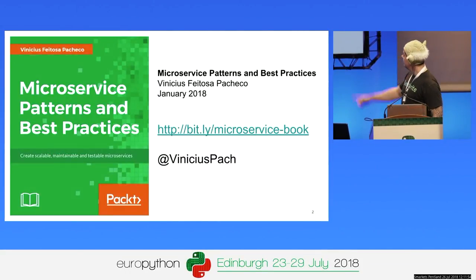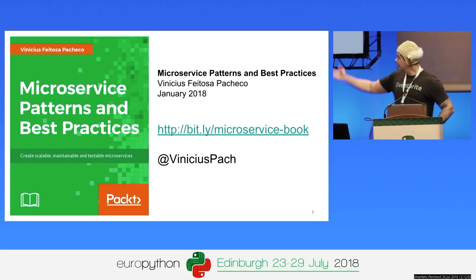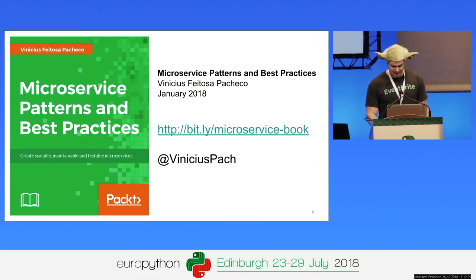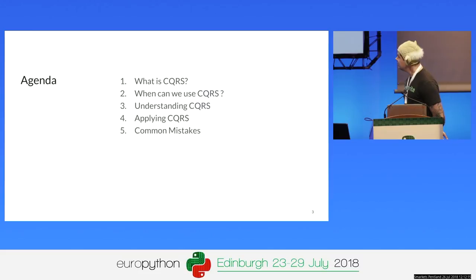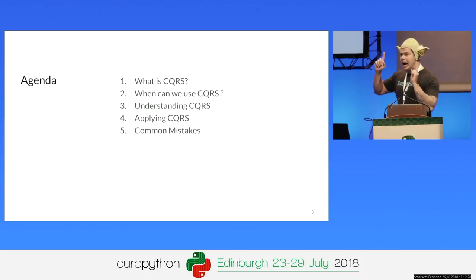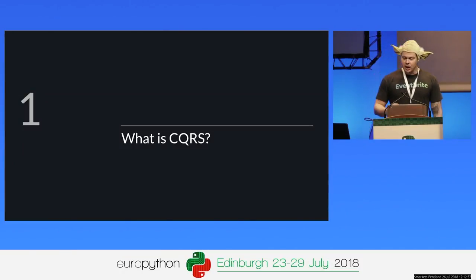I released a book earlier this year in January, and the content of this talk — the subject of this talk — makes part of my book. There's a link on my Twitter if you want to buy it. The e-book is very cheap — I think it's just £9, something like this. Our agenda: What is CQRS? When can we apply this? Understanding CQRS, applying it, there is a live code, and the common mistakes. When you see it on the screen, there is live code — that's the rule.